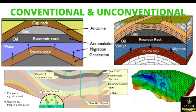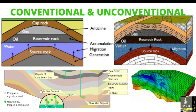In summary: source rock generates the hydrocarbons, then the migration process starts, then they accumulate in the reservoir rocks, and then are sealed by the cap rock. Conventional reservoirs are those which are easily producible — we can recover hydrocarbons easily. Unconventional reservoirs are tight gas reservoirs with low permeability which are not easily recoverable.